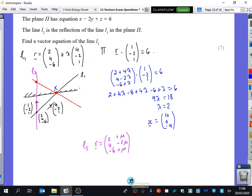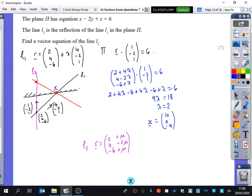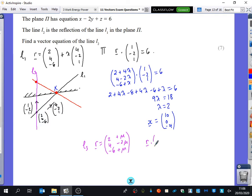And now we're going to want to find out where that intersects the plane. So we're going to do the same process that we just did here. So I'm going to do R dot (1, 2, 1) equals 6. So 2 plus μ minus 8 plus 4μ minus 6 plus μ equals 6. So that's 6μ equals 18. So μ is 3.